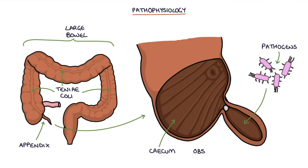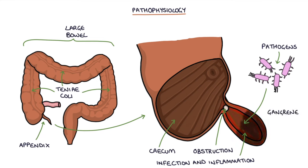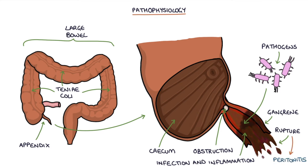Pathogens can get trapped due to obstruction at the point where the appendix meets the bowel. Trapping of pathogens leads to infection and inflammation. The inflammation may proceed to gangrene and rupture of the appendix. When the appendix ruptures, fecal contents and infective material are released into the peritoneal cavity, and this leads to peritonitis, which is inflammation of the peritoneal lining.